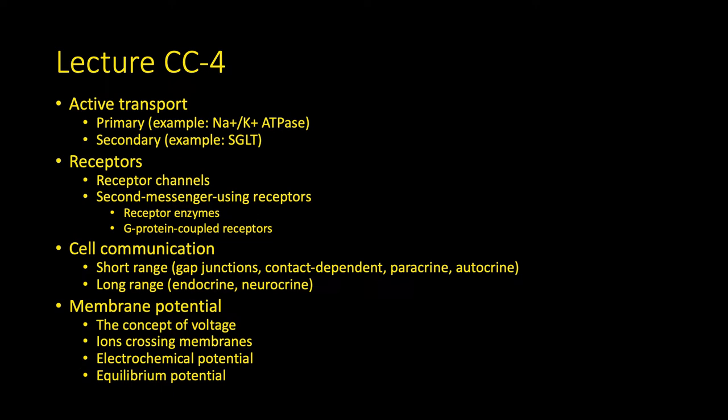We'll talk about several different types, receptor channels, and then receptors that use second messengers, like receptor enzymes and G-protein coupled receptors. We'll then talk about some types of cell communication, both short-range and long-range methods. And then we'll get into the idea of membrane potential, which will be very useful for our next unit on the nervous system. We'll talk about what voltage is, what happens when ions cross membranes, and what other factors affect them other than diffusion. We'll then talk about electrochemical potential and the idea of equilibrium potential.